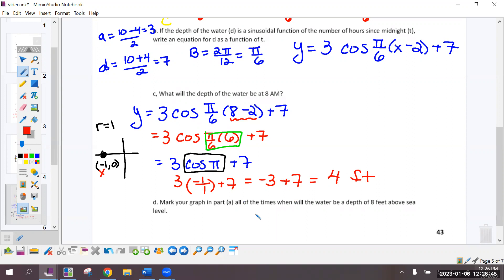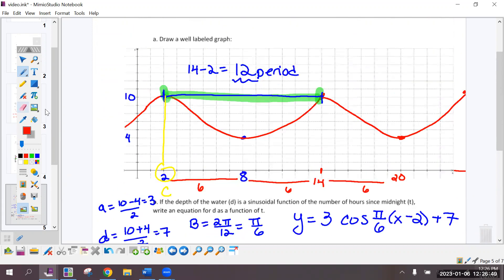Mark on your graph in part A, all of the times the depth of the water is 8 feet. So I'm going to draw a line at 8. A horizontal line at 8 feet. And it happens here, here, here, here, and again here.